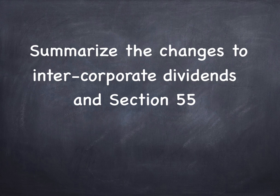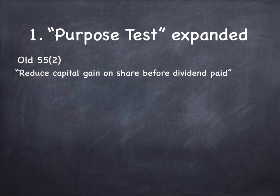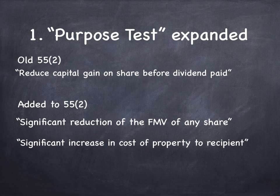So let's summarize the changes to intercorporate dividends in Section 55. It is a fairly complicated set of rules. Number one, the purpose test was expanded. The old 55.2 basically said, in very rough language, that if the dividend reduced the capital gain on a share before the dividend was paid, you met the purpose test. But they added: the purpose test also includes if the transaction led to a significant reduction of the fair market value of any share in the corporation, or if it led to a significant increase in the cost of property to the recipient — then that's also going to meet the purpose test and those negative consequences are going to apply.